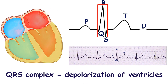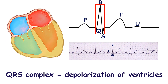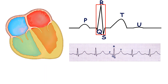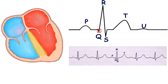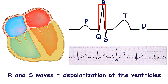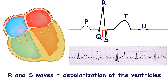The QRS complex follows the P wave. It corresponds to the depolarization of the right and left ventricle. The depolarization wave spreads from the inner to the outer layers of the myocardium. The Q wave is the first negative downward deflection in the QRS complex, and normal Q waves represent depolarization of the ventricular septum. Then the R wave follows as an upward deflection, and the S wave is any downward deflection after the R wave.